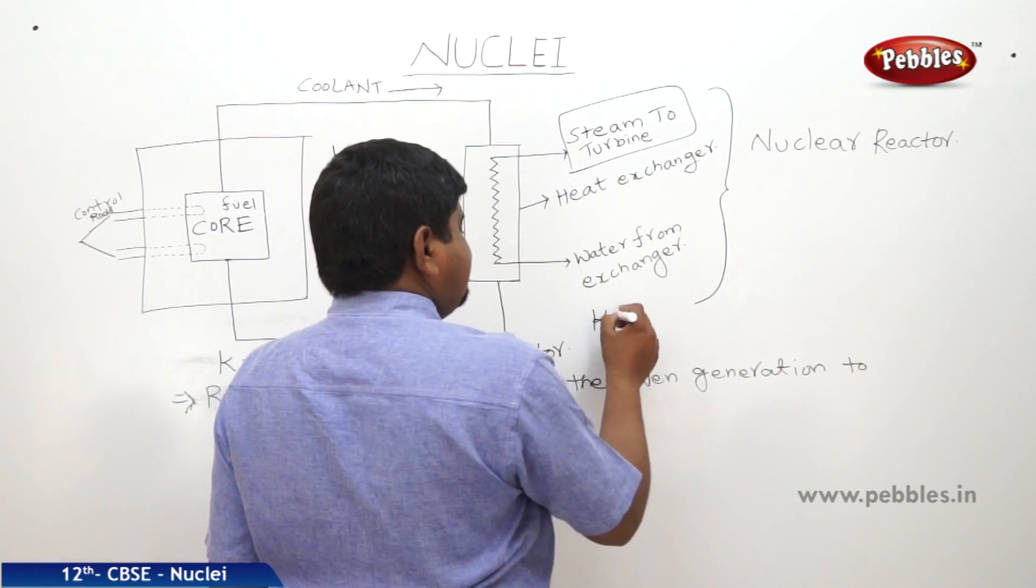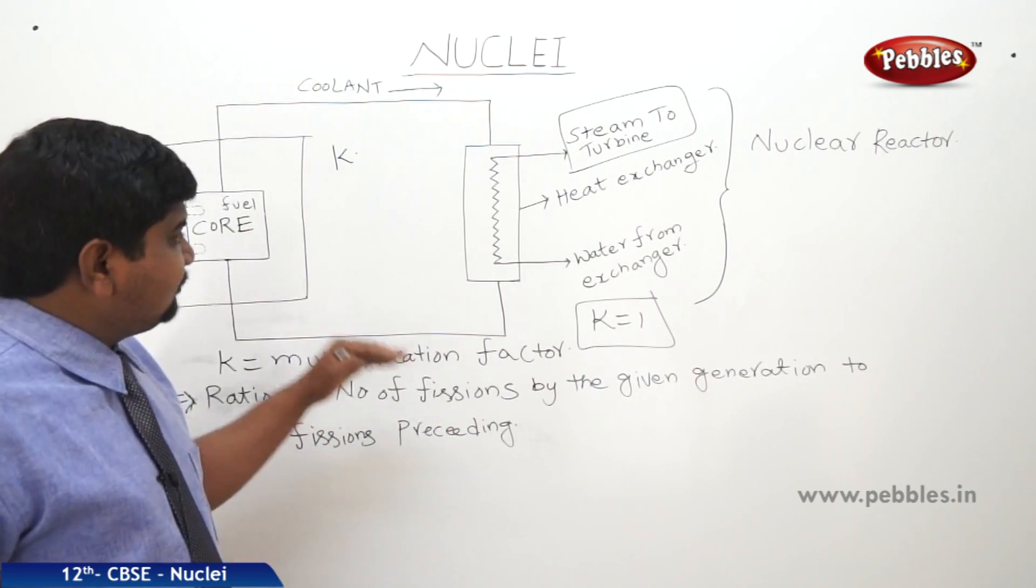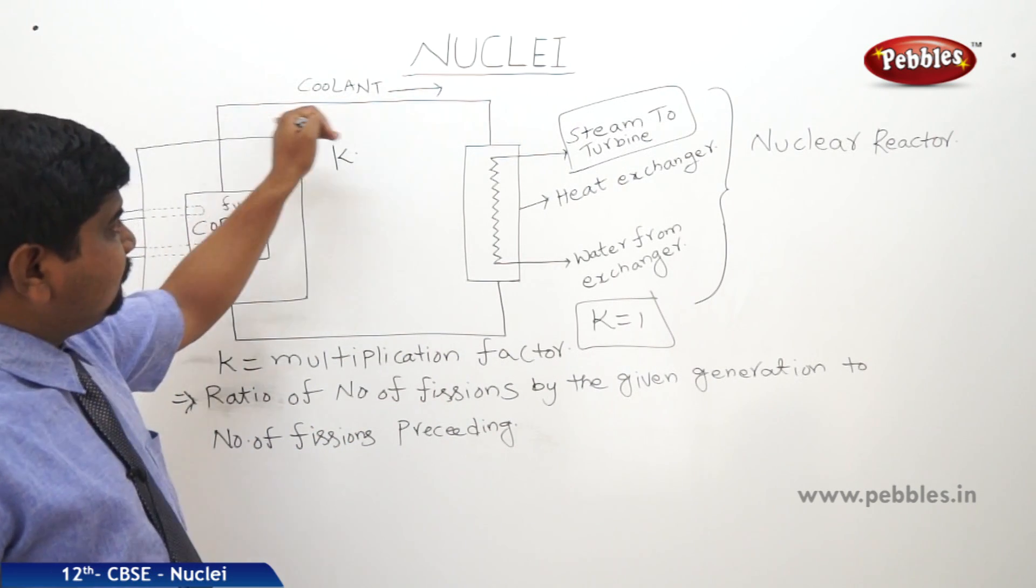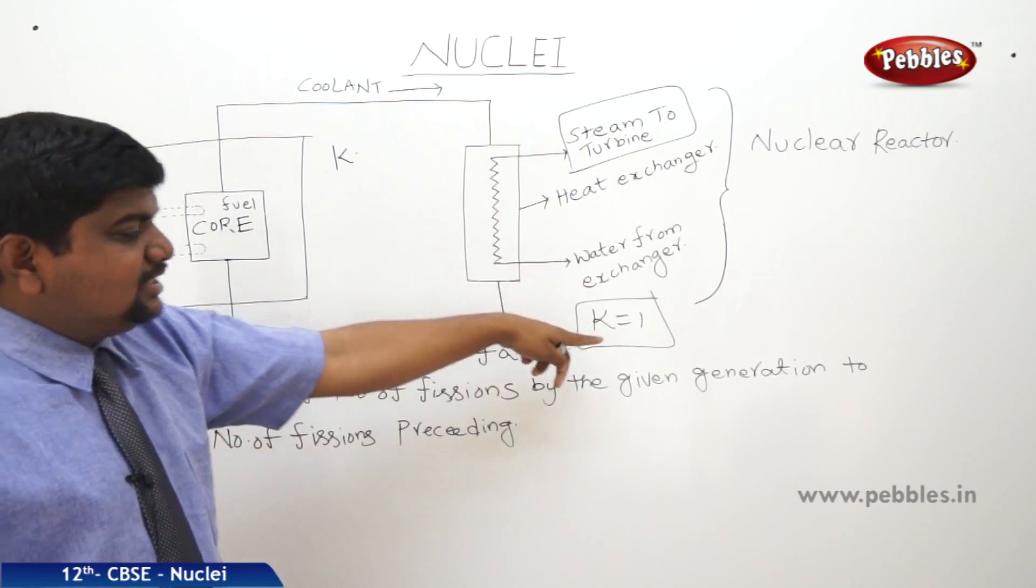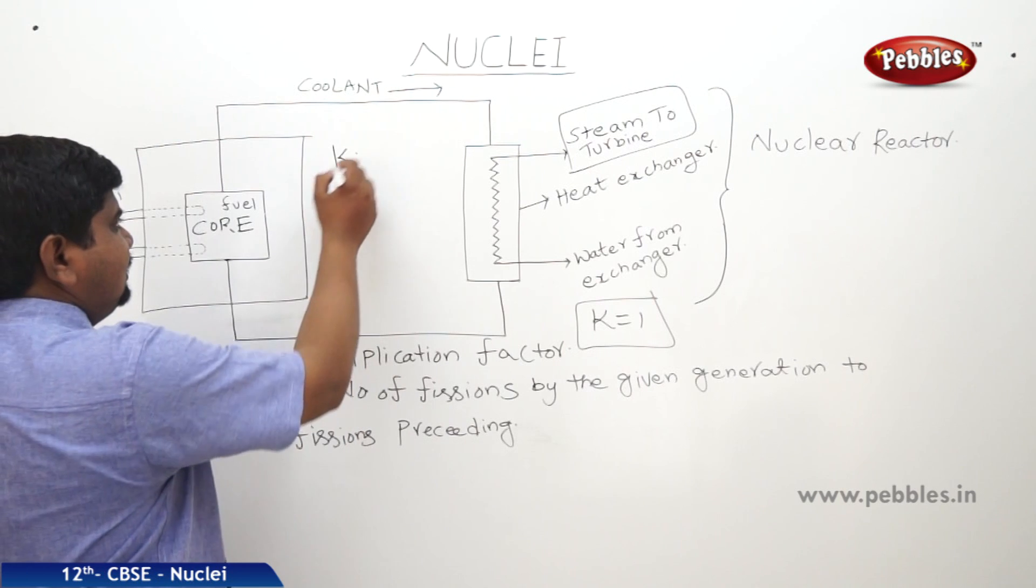If this K is equal to 1, if the ratio is 1, means number of fissions taken place by the given generated materials to the number of fissions preceding is K equal to 1, then we can say that this nuclear reactor is in critical condition.